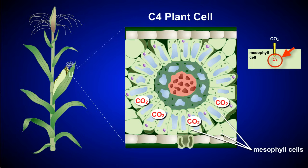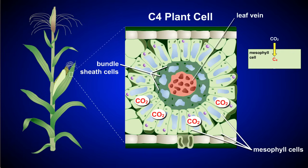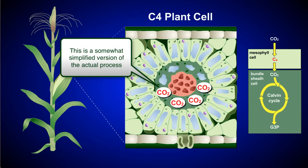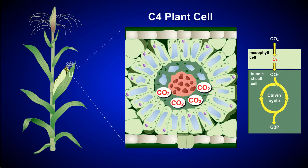But the anatomy of a C4 plant is different from that of a C3 plant. A somewhat simplified version of this process is shown here. In a C4 leaf, chloroplasts are located in mesophyll cells, but they are also located in bundle sheath cells, which surround the leaf vein. CO2 moves from the mesophyll cells into the bundle sheath cells, where the Calvin cycle occurs. This shields the plant from the oxygen buildup that would otherwise occur when the stomata are closed during dry conditions.